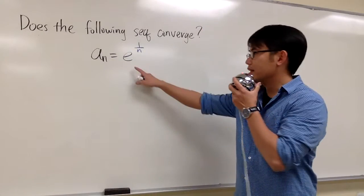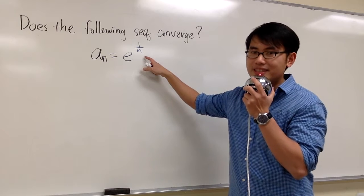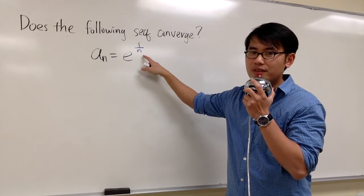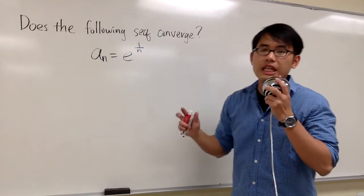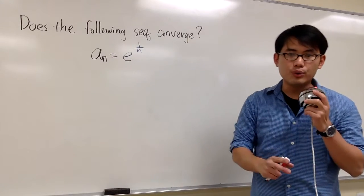We would like to know if the sequence e to the 1 over n converges or diverges, and all we need to do is check the limit as n goes to infinity to see what happens. If we have a finite value for the limit, that means this sequence converges to that value.